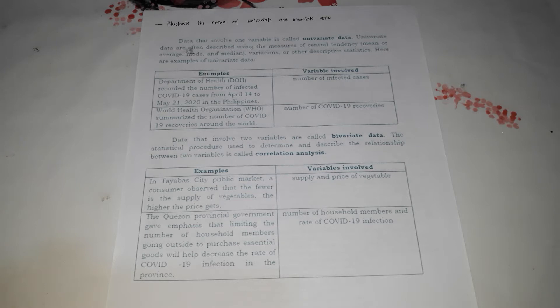Data that involves one variable is called univariate data. Univariate data are often described using the measures of central tendency — mean, median, mode, and average — along with variations and other descriptive statistics.